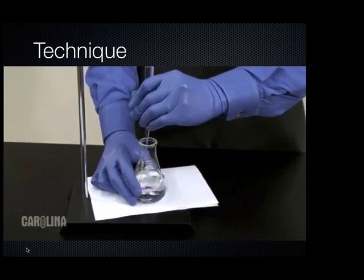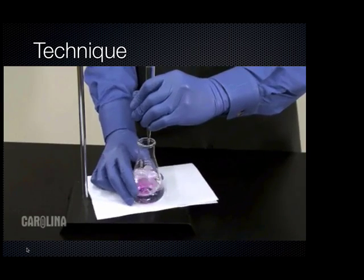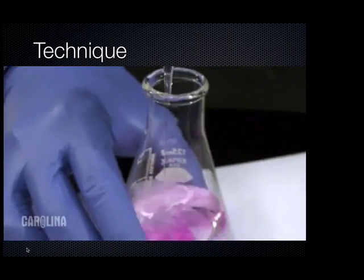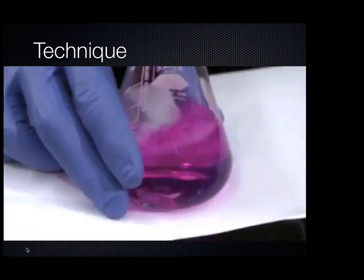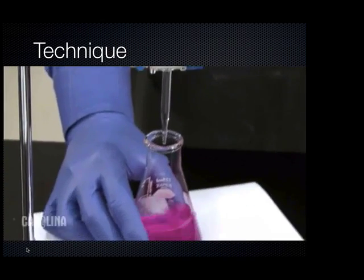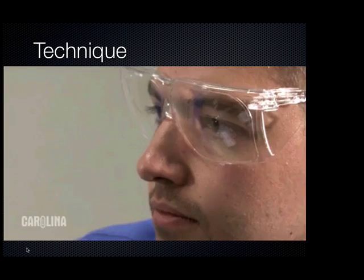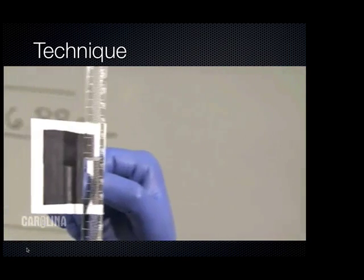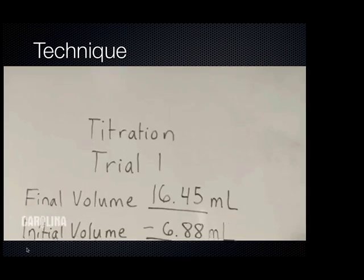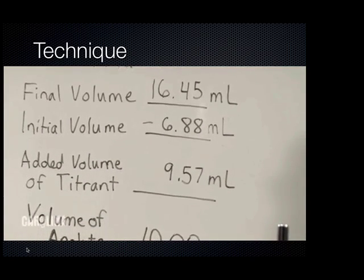It is common laboratory practice that the first titration is an estimate. Open up the stopcock and allow the titrant to enter the flask quickly. Continuously swirl the flask. As the volume of titrant in the flask increases, the color of the indicator appears then disappears as you swirl. When the analyte becomes a colored solution, close the stopcock. Record the final volume of the burette.